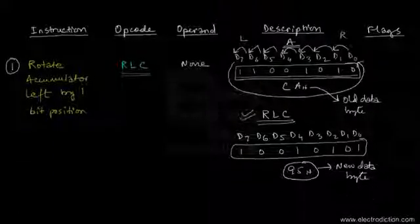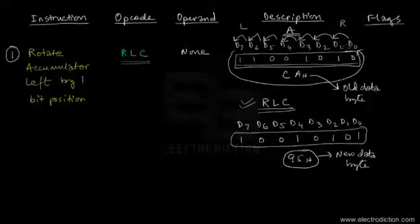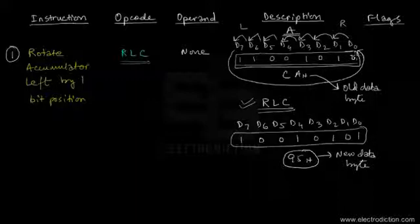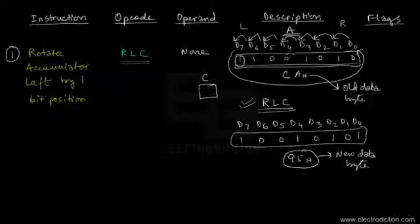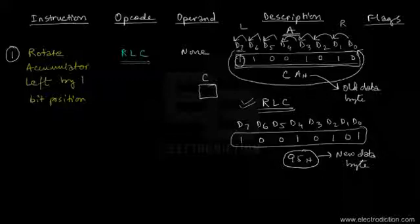When the bits move towards the left by one bit position, bit D7 becomes bit D0. When bit D7 goes and occupies the place of bit D0, that particular bit being transferred from D7 to D0 is also recorded by the carry flag. In this example, bit D7 is 1, and it goes to the D0 position, so this 1 is also recorded in the carry flag.